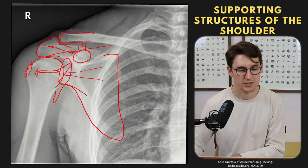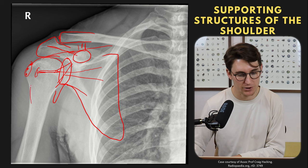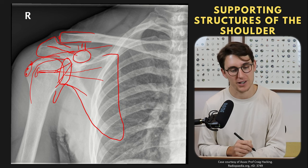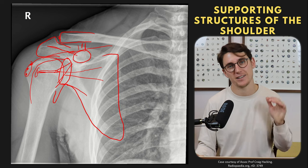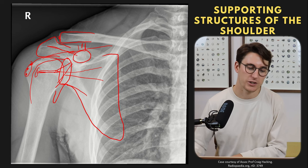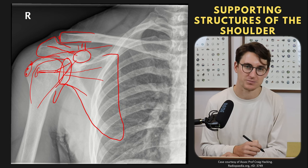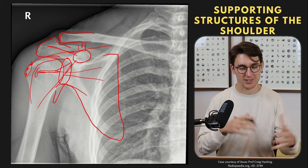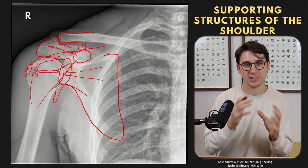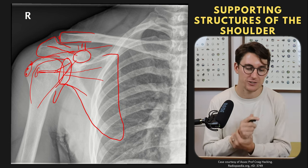In between the greater and lesser tuberosities is the intertubercular or bicipital groove. The long head of the biceps tendon runs through this groove and attaches to the biceps anchor on the superior labrum — it's the only tendon in the body that is actually intracapsular, running through the capsule of the glenohumeral joint. The short head attaches to the coracoid process. You really need a good understanding of where all these components lie relative to one another to identify them on a single MRI slice.